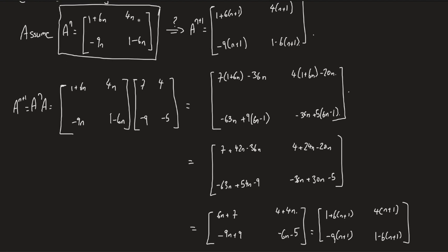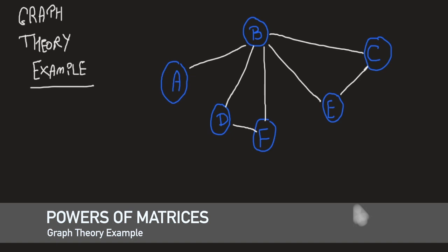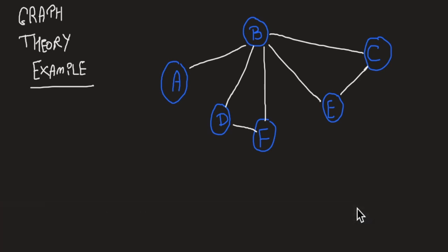One last example of matrix powers comes from graph theory. A graph is a set of vertices where connections between vertices are referred to as edges. You have seen many graphs in real life — for example, a map of the interstate highway system or the airline route map at the back of in-flight magazines. A path from one vertex V to another vertex W is a sequence of edges connecting V to W.